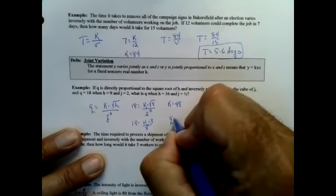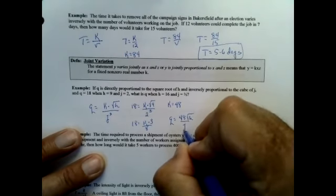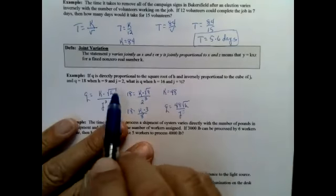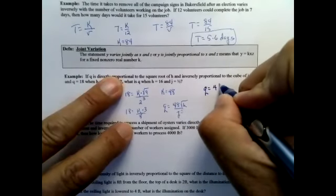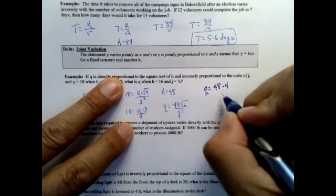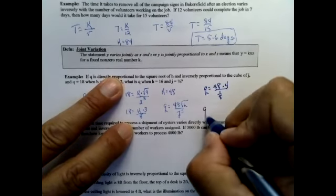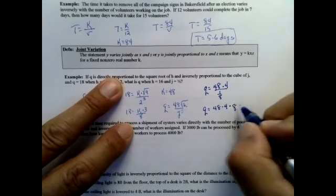So now I have a new equation: q equals 48 times the square root of h over j cubed. I think my pen is done. All right, so blah blah blah blah blah. What is q? It's a letter. When h is 16, well I'm going to take the square root of that right away, and j is 1/2, that's going to give me 1/8.